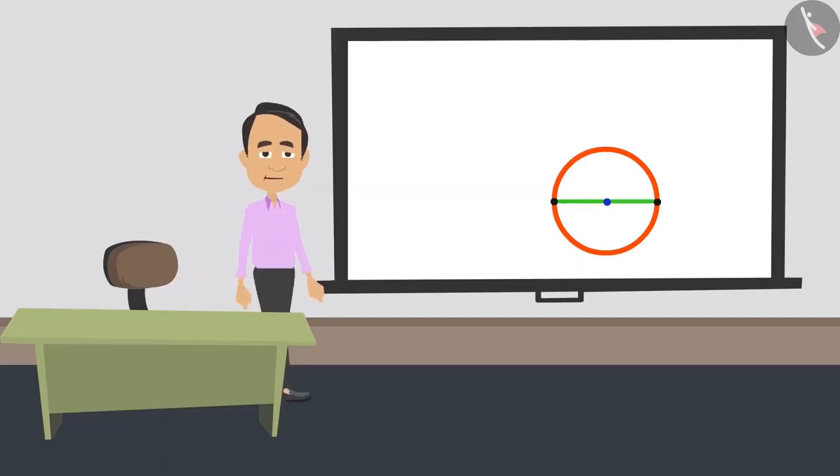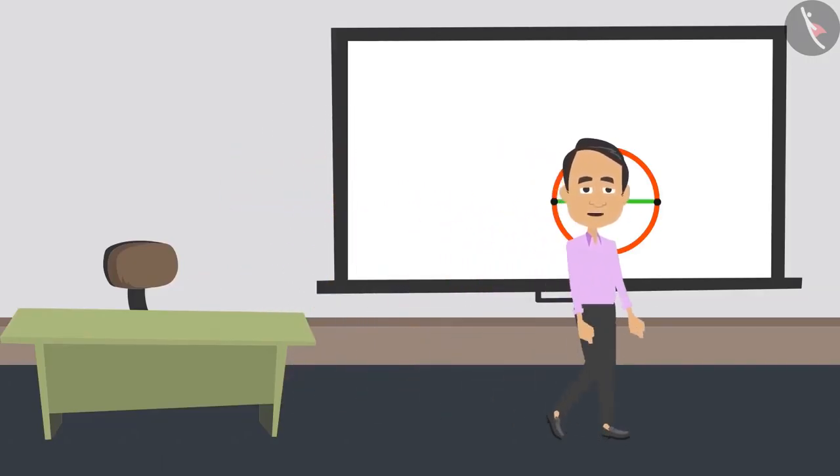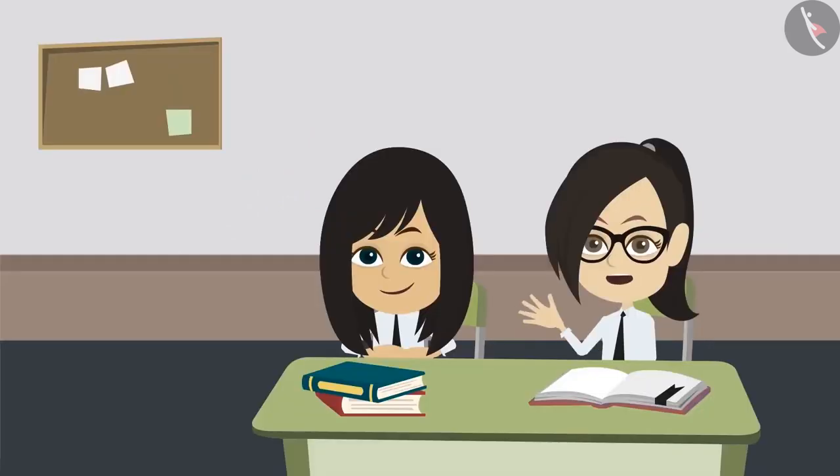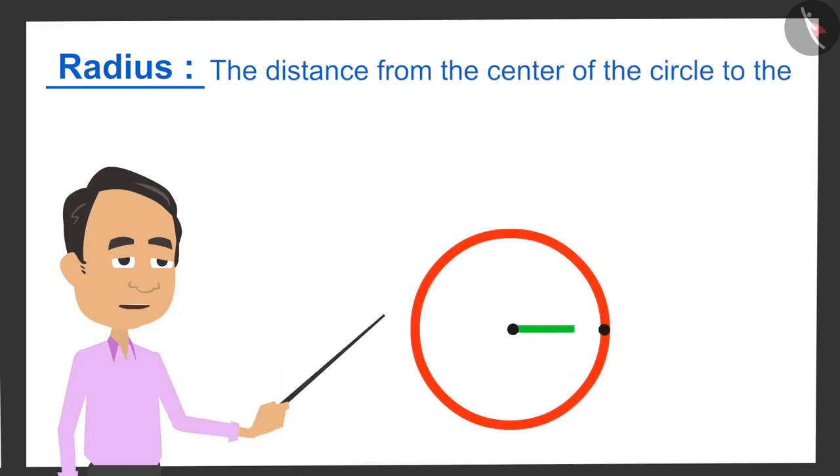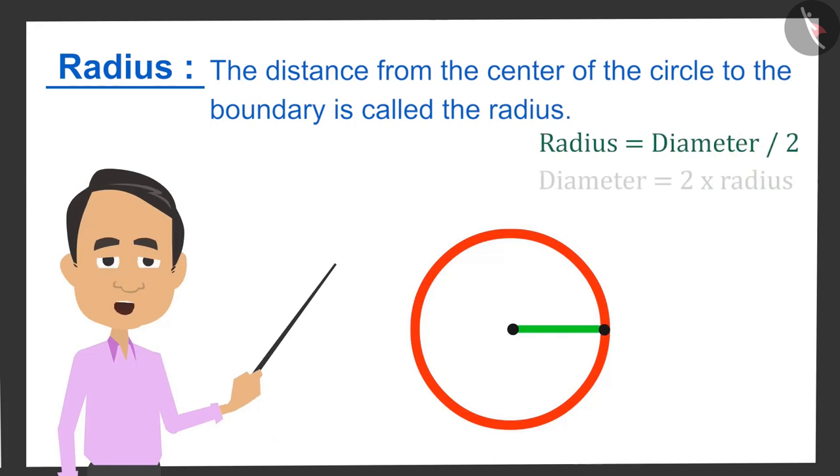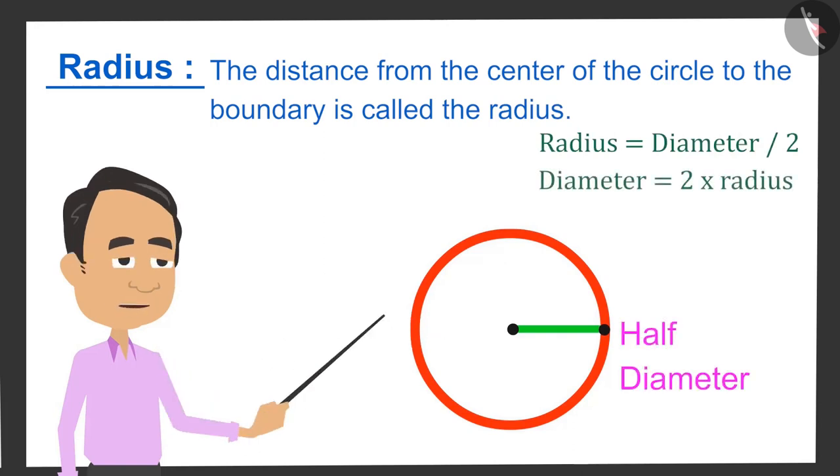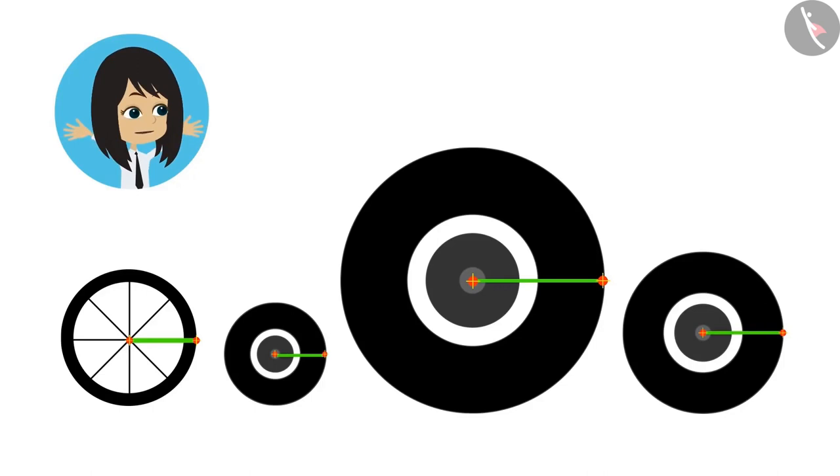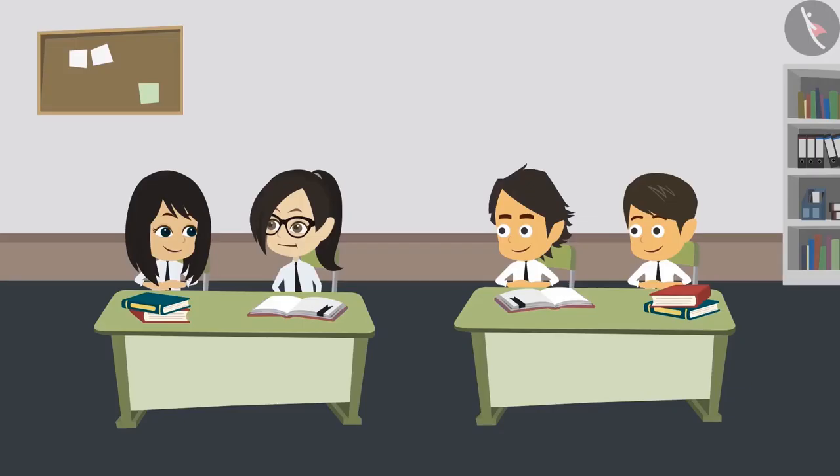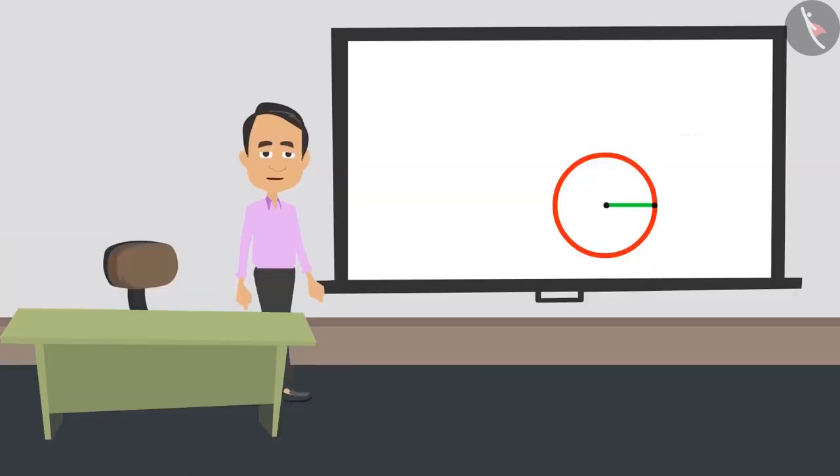Absolutely right. But before that, you should know another property of a circle. Sir, what is a radius? The distance from the centre of the circle to the boundary is called radius. It is half of the diameter. So, it can also be called half diameter. That means if we measure the distance from the centre of the wheels to the boundary, then we will know their radius. Yes, and we can also tell the difference between wheels when we know the radius of different wheels.